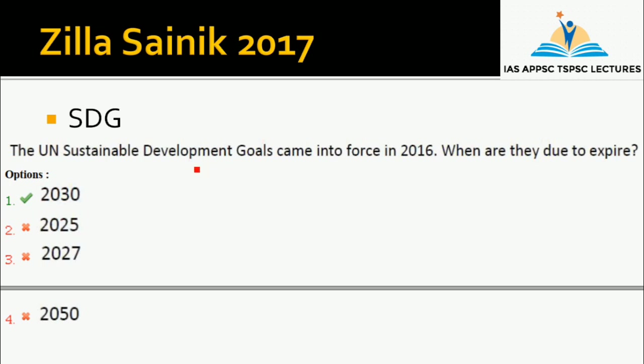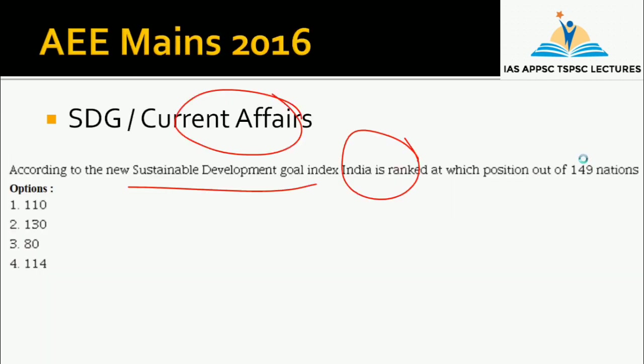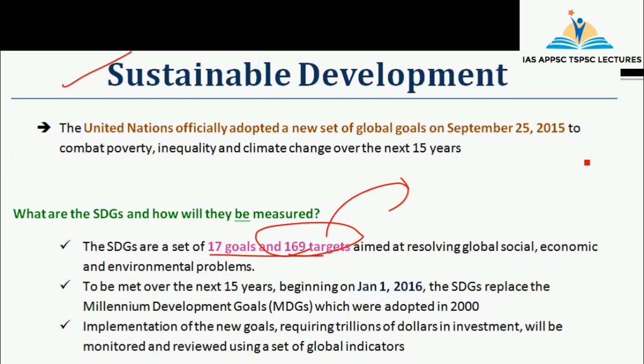The UN Sustainable Development Goals came into force in 2016 — when are they due to expire? This is already in the summary material. The SDGs began on January 1st, 2016, and end in 2030. That is the key numerical data you need to remember.